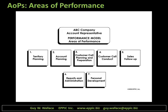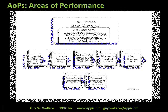Territory planning is one chunk of the job. Account planning is a different chunk, but they relate. The customer call planning and preparation, the customer call conduct, the sales follow-up, various reports and administration, and personal development — this is one way to chunk out the key results areas, the major duties, or what I call the areas of performance for a job. From there, we can dive deeper and look at the specifics: the outputs and the tasks, etc.